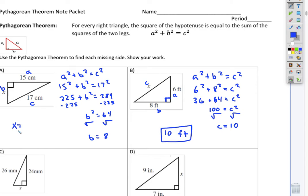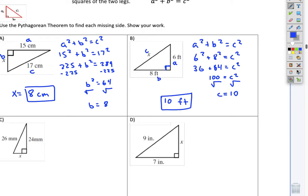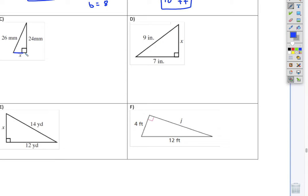So here, x equals, or b, you can write b, 8 centimeters. Okay. All of the rest of the examples on this note page, we're finding a leg.